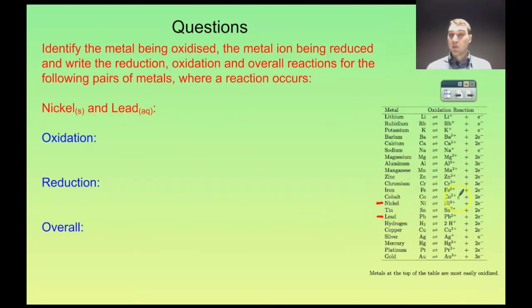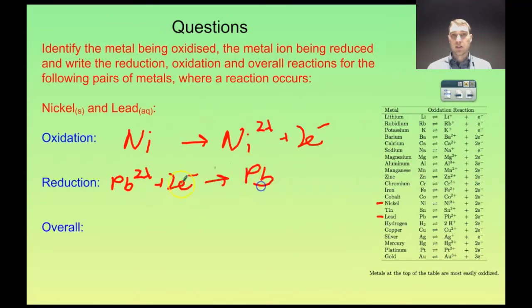The nickel is more active so it's going to be oxidized. So the solid nickel is going to be oxidized so nickel is going to go to nickel ions, so we're going to nickel 2+ plus 2 electrons. The lead ions in the solution are going to be reduced. So the Pb2+, lead 2+ ions plus 2 electrons goes to solid lead. So here we have oxidation. Oxidation is loss. Here we have reduction. Reduction is gain. Lead ions are gaining electrons to form solid lead.